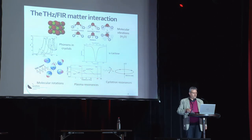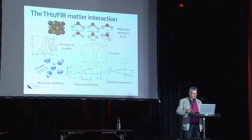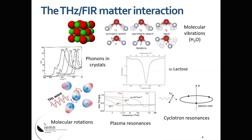In the Terahertz and far-infrared, we have a lot of interaction with matter. We have phonons, which for heavy atoms go down from the mid-infrared to the far-infrared. We also have molecular vibration — either internal vibration of the molecular skeleton or phonons in molecular crystals — as well as molecular rotation mainly in gases, plasma resonance, and cyclotron resonance in solids and semiconductors.